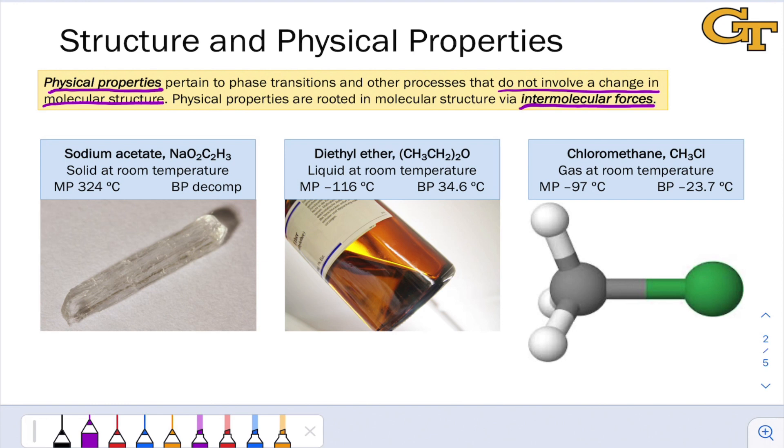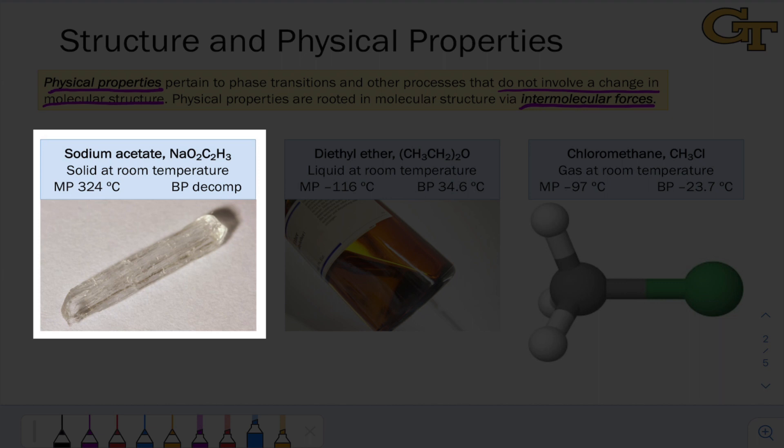On this slide, I've given three examples of carbon-containing compounds in different states of matter. It makes the point that organic compounds may be solid, liquid, or gas at room temperature, depending on their molecular structures. Sodium acetate, for example, is a solid at room temperature, with a melting point way up at 324 degrees Celsius.